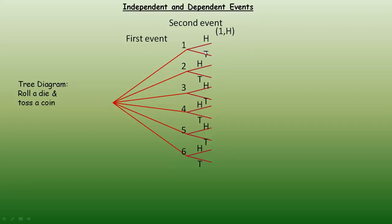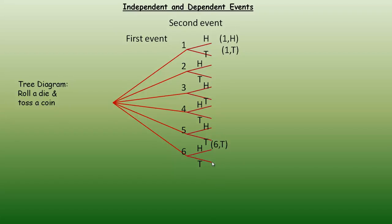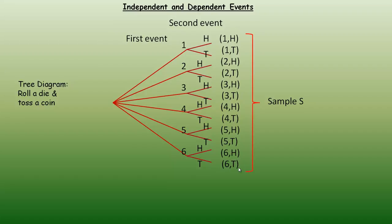If you got a one on the die and then a head on the coin, that's the outcome along that branch — a one on the die and a head on the coin. The next one would be a one on the die and a tail. Right down to the bottom, this would be getting a six on the die and then a tail. This listing of all possible outcomes is called the sample space — everything from a one and a head to a six and a tail.